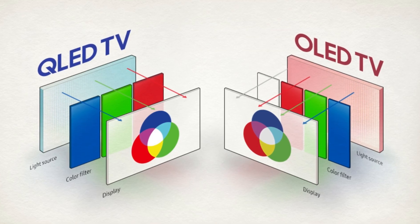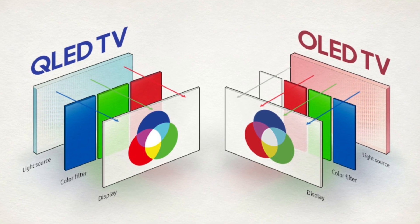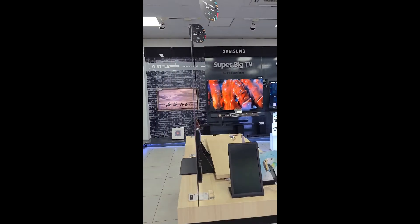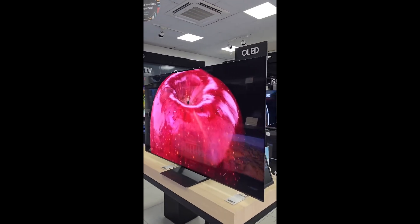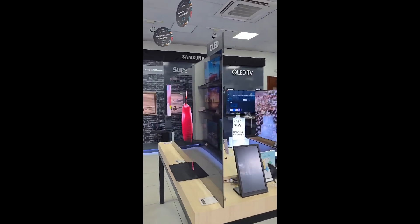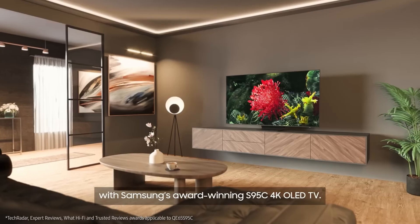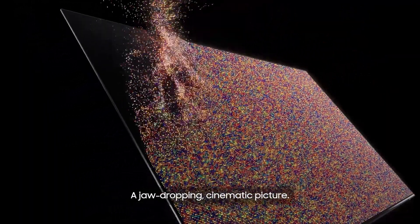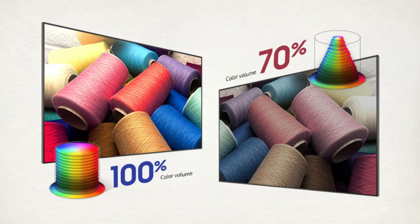When it comes to color performance, both OLED and QLED bring a lot to the table but do so in slightly different ways. OLED displays are often praised for their natural, lifelike color tones. Because of their contrast and black levels, colors seem to pop effortlessly without needing to be oversaturated. Skin tones appear warm and realistic, while shadows and highlights retain subtle detail. OLEDs excel in delivering moody, atmospheric scenes that require nuanced shading.